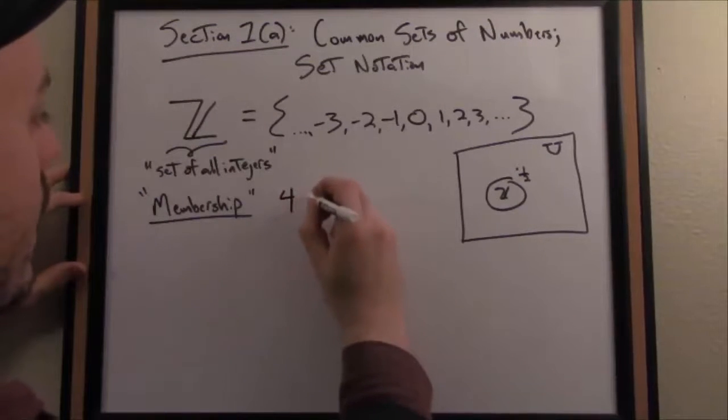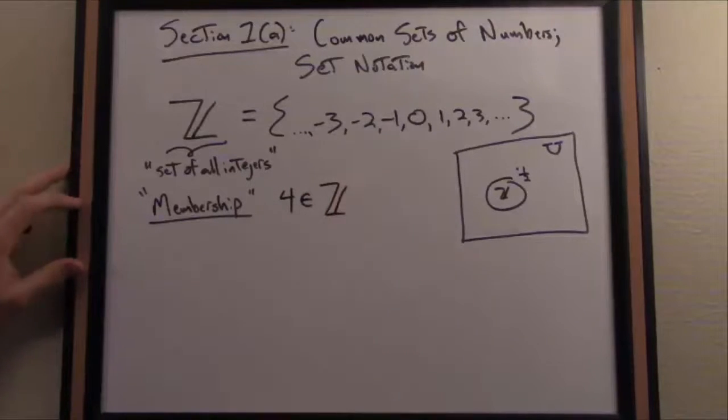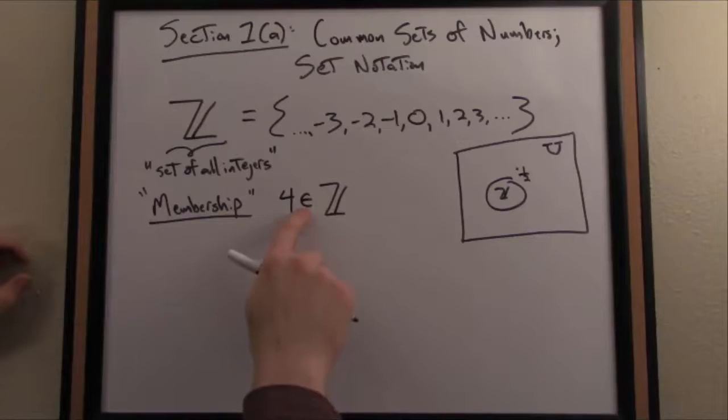Here's the notation as it works. Let's say the number four. The number four, that's a whole number, an integer. So I can write this notation. This symbol, if you're not familiar, is epsilon.